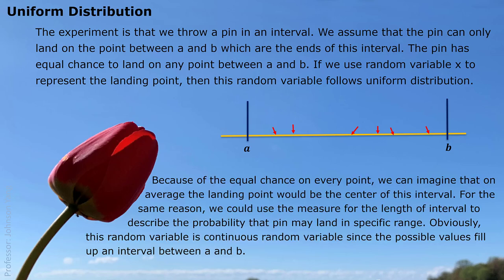Because of the equal chance on every point, we can imagine that on average the landing point would be the center of this interval. So the mean is (a + b) / 2. For the same reason, we could use the measure for the length of the interval to describe the probability that the pin may land in a specific range. Obviously, this random variable is continuous since the possible values fill up an interval between a and b.